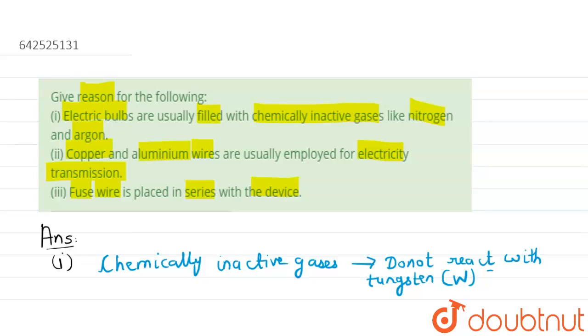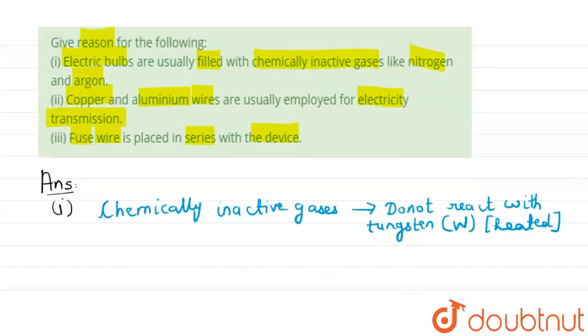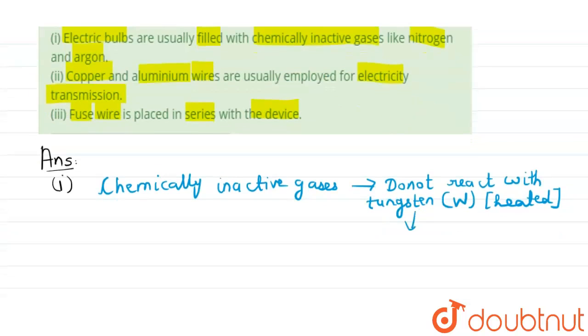Heated due to which the lifespan of bulb increases. Hence we use chemically inactive gases like nitrogen, helium, argon, etc.